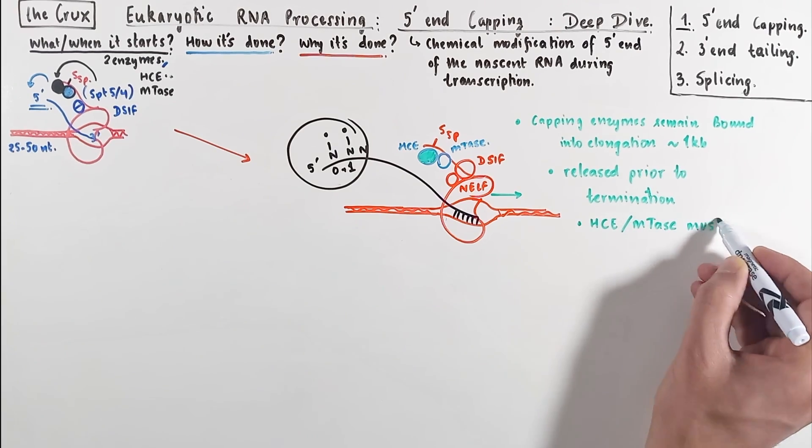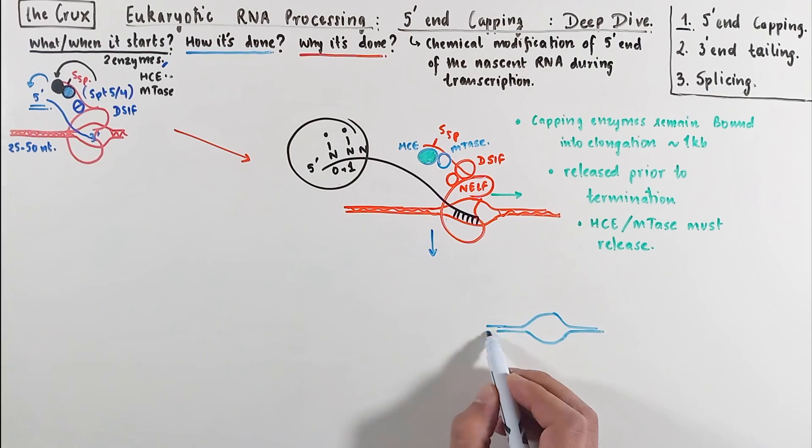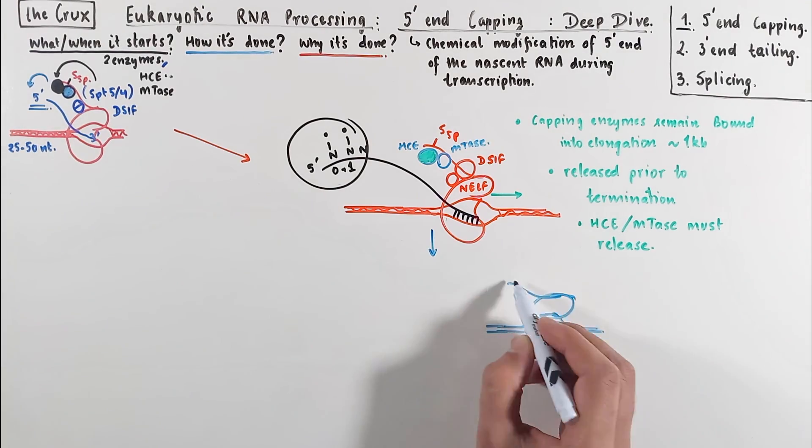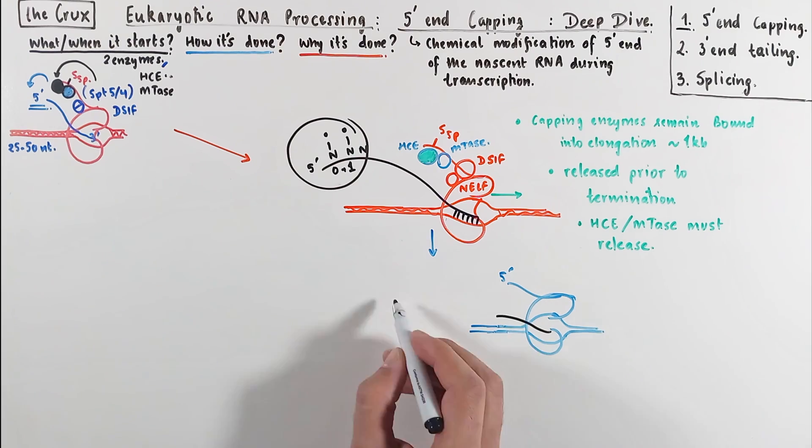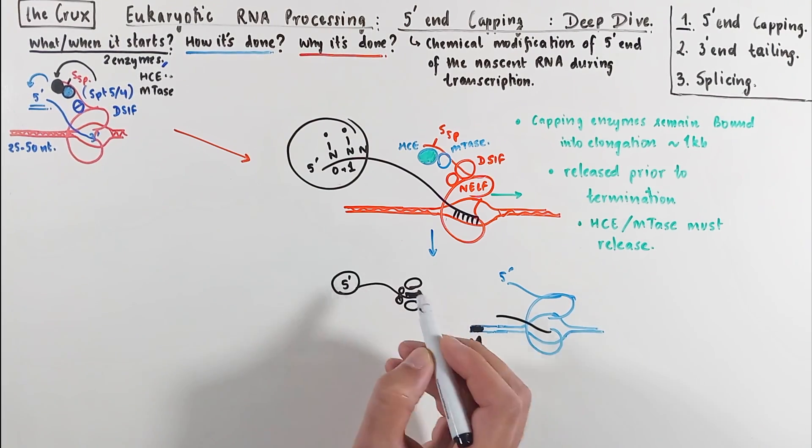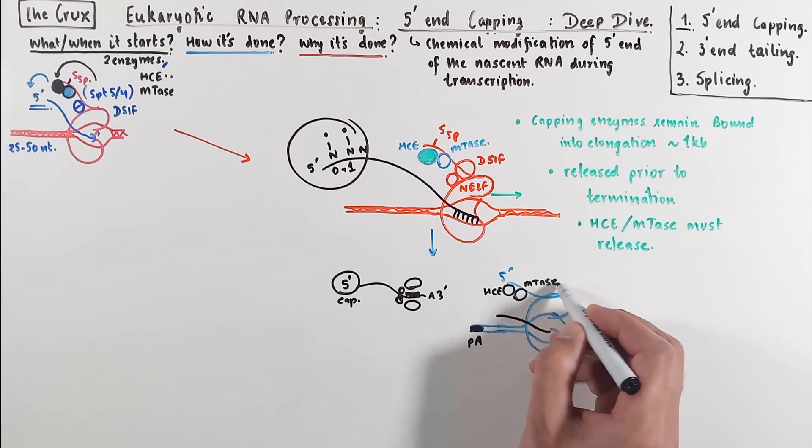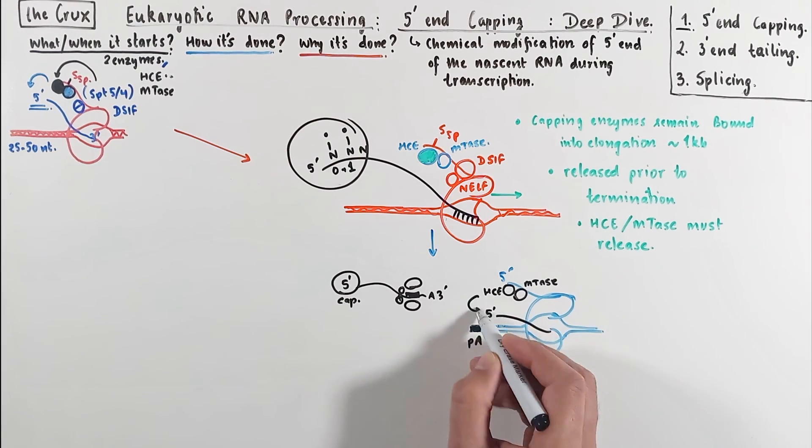Now why is that? So now if you'll look into the termination step and the polymerase, where let's go with the example of poly-A termination. We saw that the poly-A signal is recognized and the RNA is cleaved off. Now if capping enzymes are present along with this polymerase at the termination step, where the RNA cleavage has occurred, they can actually cap this cleaved RNA again.